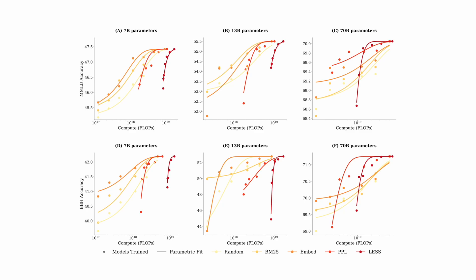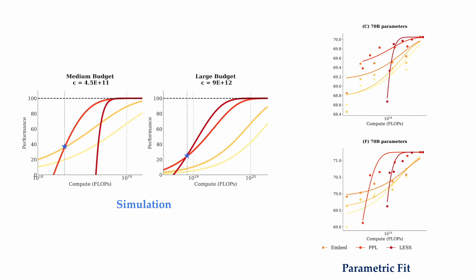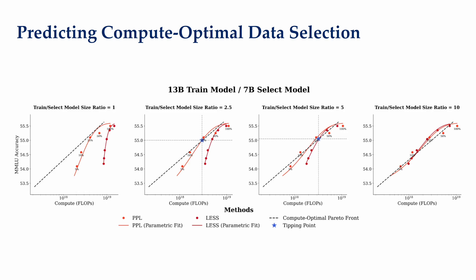Interestingly, we can also use the empirical runs and fit to our proposed formula for data selection. Specifically, we fit the parametric formula that we proposed to the empirical curves by fitting the lambda parameter, per method, and per dataset. In particular, we see that the 7 billion and 13 billion results largely are aligned with the small budget scenario described in our simulation, where sophisticated methods are dominated by cheaper methods. And the 70 billion results aligns with the medium budget and the large budget simulation, where we see both perplexity and gradient becomes compute optimal after certain flops.